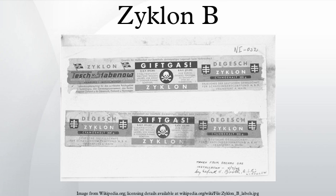Walter Heerdt, Bruno Tesch, and Gerard Peters were all collaborators of Fritz Haber working at the Kaiser Wilhelm Institute for Physical Chemistry and Electrochemistry at Berlin-Dahlem. Out of this group of Haber assistants, Walter Heerdt was named the official inventor of Zyklon B in a Dagesch patent application from June 20, 1922. The German Patent Office awarded the patent on December 27, 1926.